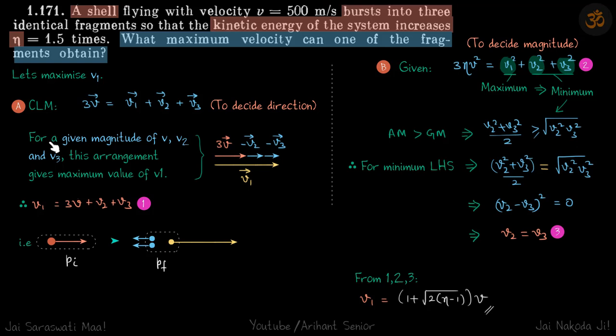So it's quite obvious that for a given magnitude of v, v2, and v3, this arrangement gives maximum value of v1. Again, with given magnitude of these three vectors, when you just add them that will give the maximum magnitude of v1. You can see that v1 is on this side and v2 and v3, when they go on the other side, will become minus v2 and minus v3.